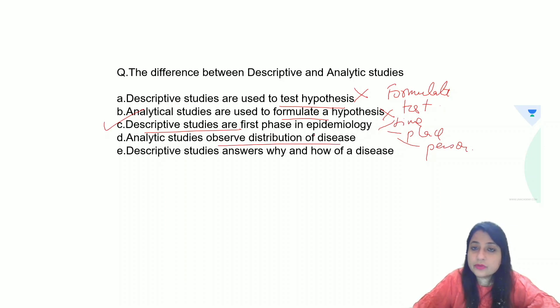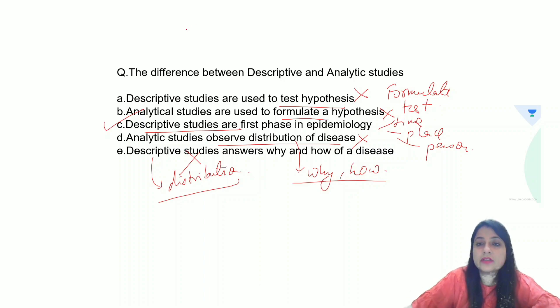Analytical studies observe distribution? No. Again, that is wrong. Distribution is in terms of time, place and person. Analytical studies tell us why and how a disease occurred. Descriptive studies answer why and how? Wrong. Descriptive study tells us about distribution. So the correct answer over here is descriptive studies are first phase in epidemiology.